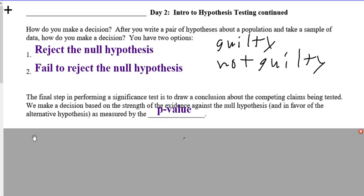So the final step in performing a significance test is to draw a conclusion about competing claims. We make a decision based on the strength of the evidence against the null hypothesis, just like in the legal courtroom. You make a decision if you're on the jury based on the strength of the evidence.